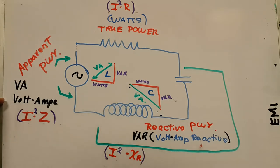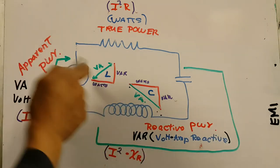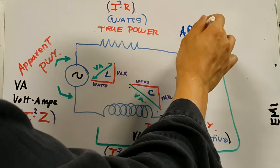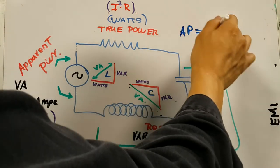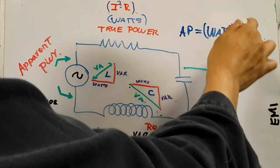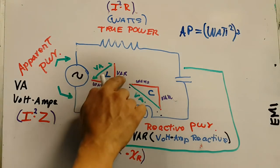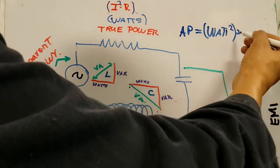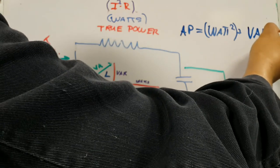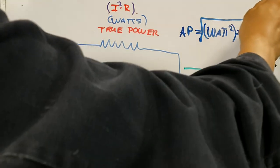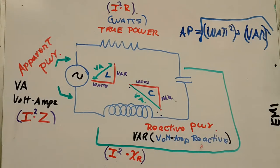Another way to solve for apparent power is: apparent power equals the square root of true power squared plus reactive power squared — that is, VA equals the square root of watts squared plus VARs squared, regardless of whether the reactive component is inductive or capacitive. So there are two methods to calculate apparent power.